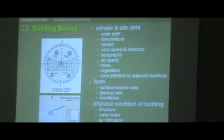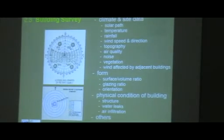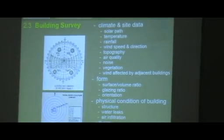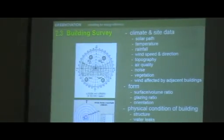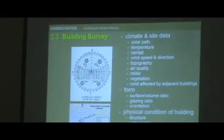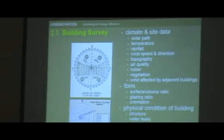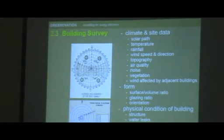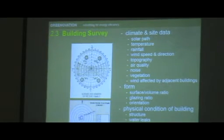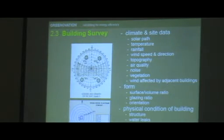Third, building survey. We're talking about a building which was done without much thought on energy efficiency or green architecture. We have to gather a lot of data to know how we're going to tackle retrofitting. First, climate and site data. Know the solar path — here we have the azimuth chart and how to read the sun path chart — so you can compute where to put your sun shading devices and determine their length, depth, or size.